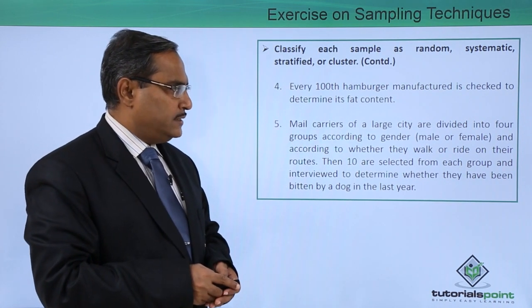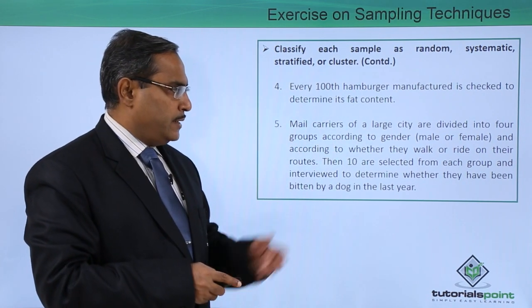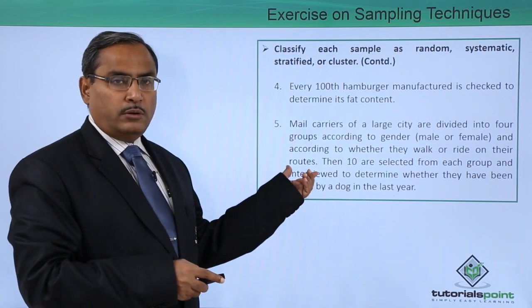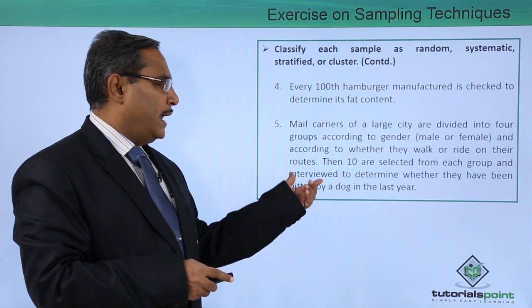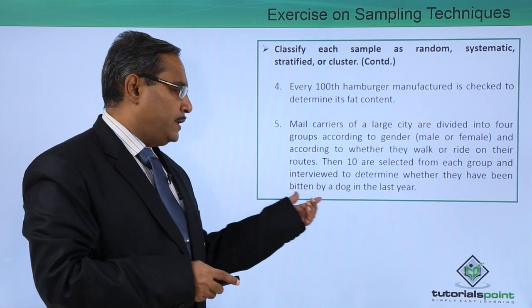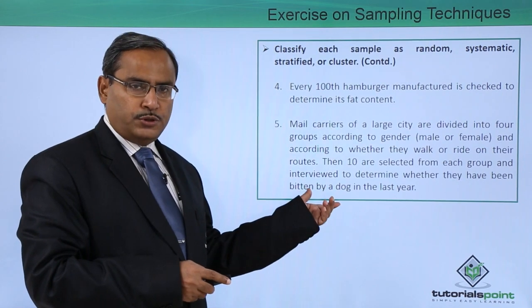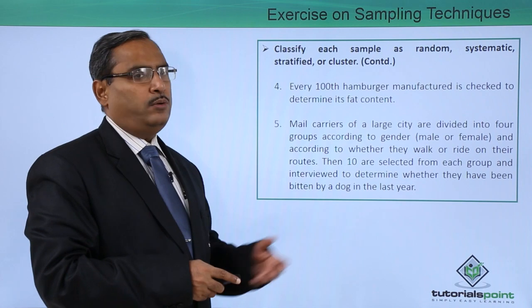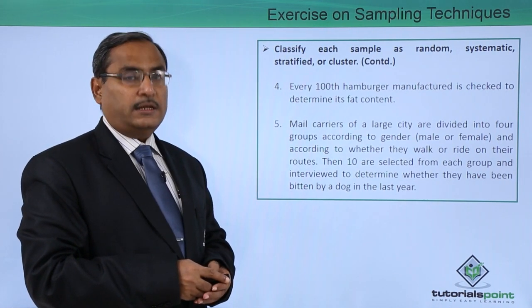Mail carriers of a large city are divided into four groups according to gender — male or female — and according to whether they walk or ride on their routes. Then ten are selected from each group and interviewed to determine whether they have been bitten by a dog in the last year. Here we have four groups and we are taking some members from each group, so it is a good example of cluster sampling.